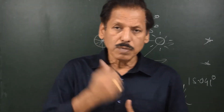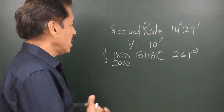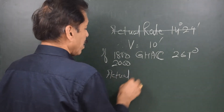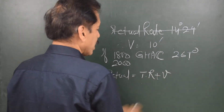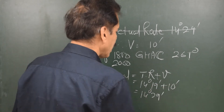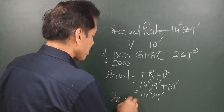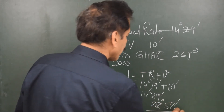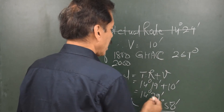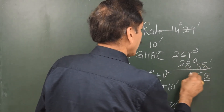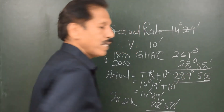Let's do a simple numerical. GHA of Moon at 1800 is 261 degrees. The actual rate equals the tabulated rate plus V, which is 14 degrees 19 minutes plus 10 minutes = 14 degrees 29 minutes. In two hours the change of GHA will be 28 degrees 58 minutes. So the GHA of Moon at 2100 hours will be 261 degrees plus 28 degrees 58 minutes = 289 degrees 58 minutes.